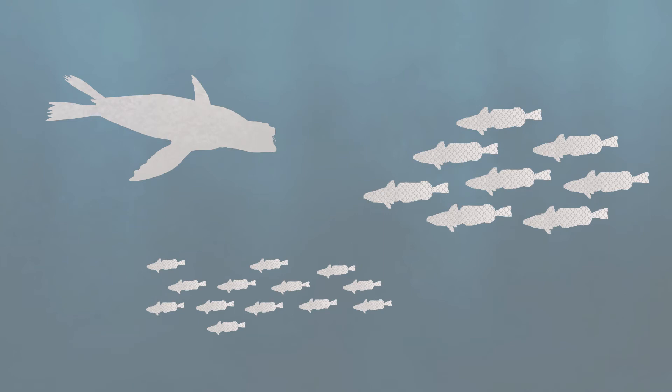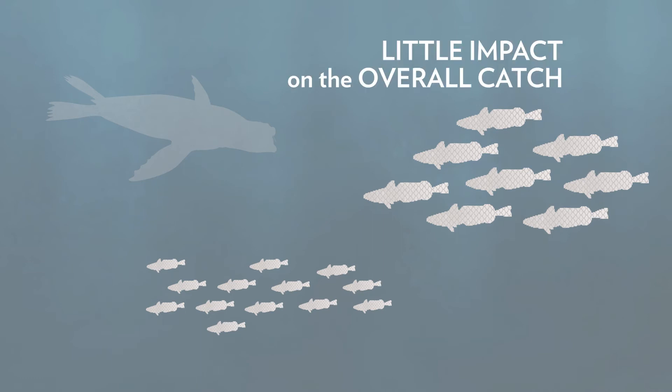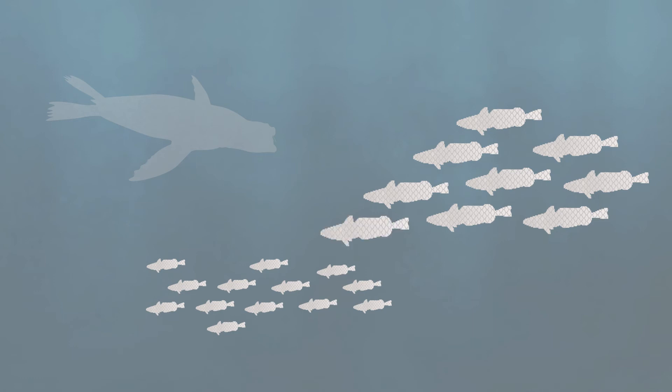One proposal was to kill fur seals in order to increase the hake catch. But the multi-species model showed that this would have little impact on the overall catch. That's because reducing the number of seals would allow one species of hake to increase and eat more of the other.